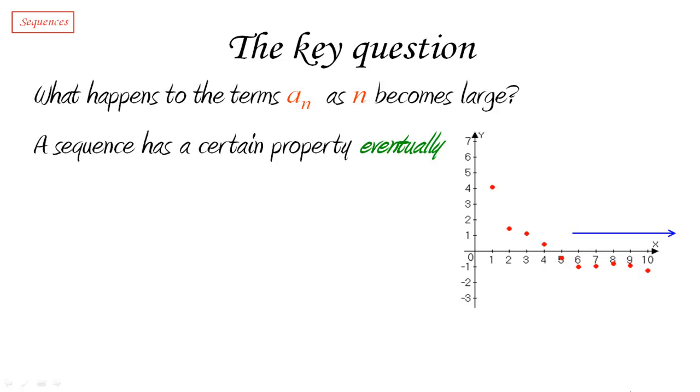We're going to say that the sequence has a certain property eventually if it has that property from some point on.